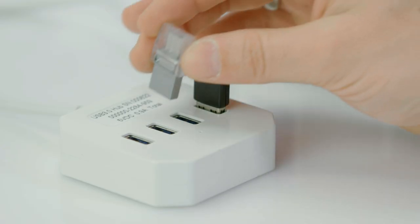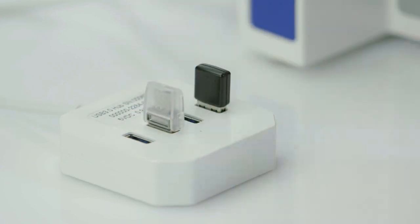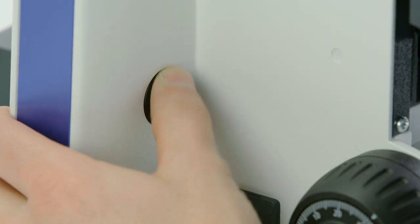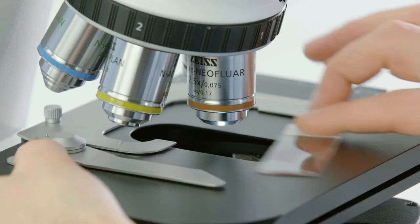Insert a USB stick into your Smart Axioscam 208 microscope camera. Switch on the microscope and place your sample on the stage.